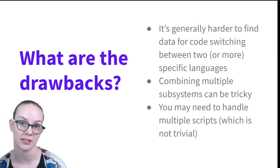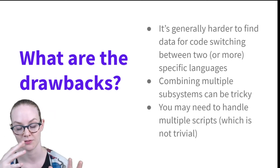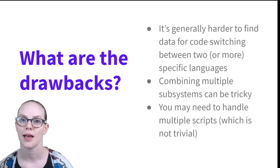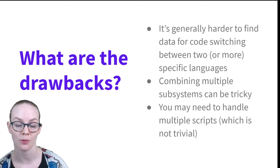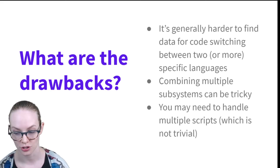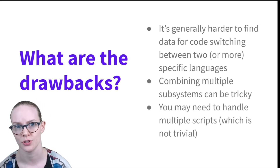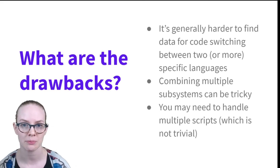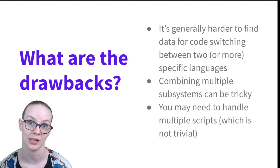In addition, if you have multiple subsystems, combining them can be a little bit tricky. You'll need to pick a specific architecture, and communicating the specific organization of your different components can take time and communication. Finally, particularly for language pairs like Hindi and English where you have different scripts that are used together, this can lead to some character encoding troubles. It's really not trivial to handle multiple scripts at the same time — from an engineering perspective, it is easiest if the languages share a script, such as the Latin alphabet.